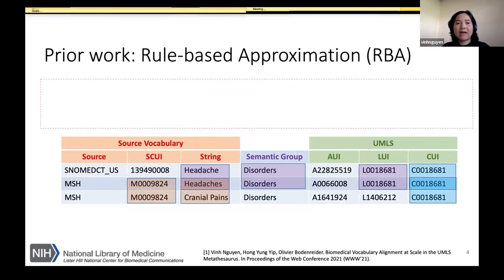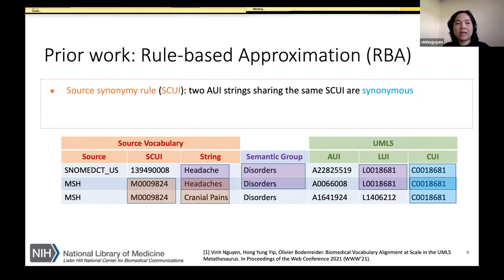In our prior work, we developed two approaches. The first is called the rule-based approximation, or RBA. In the RBA, we developed a set of logical rules to determine if two atom strings are synonymous. The source synonymous rule states: if two atom strings share the same source CUI, then they are synonymous — meaning synonymy is determined by the source vocabulary.